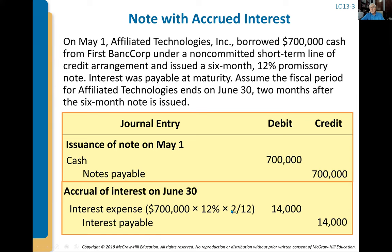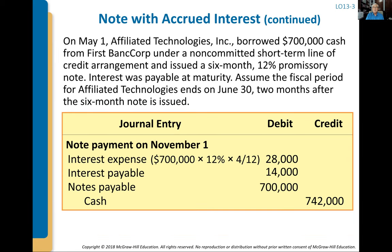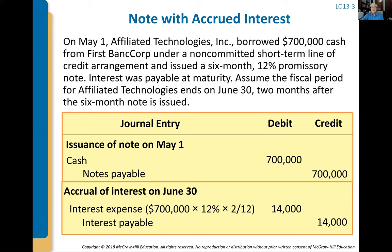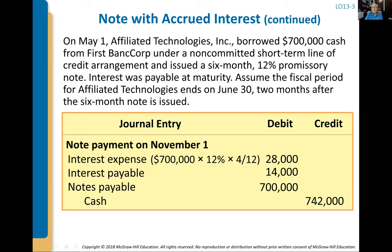Now we're not done yet — the note is going to be paid off November 1. We had to pay $742,000. But this time, we not only debit the note payable liability, we've got this interest payable we set up at June 30th. We take that interest payable down, and the remaining $28,000 is interest expense for the four months in the next accounting period. So $14,000 of the $42,000 interest went into the June 30th income statement, and the other $28,000 went into the next year's income statement. This adjusting entry gets the income statement right and it also gets the balance sheet right. There are only three entries to know: the first receipt of cash, the accrual of interest at the end of any period in the middle of the note's term, and the final payment.